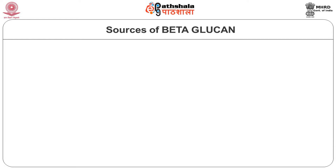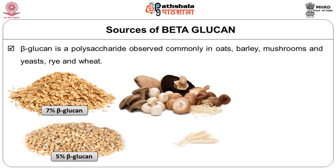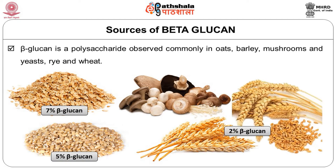Branched beta-1,4/1,6 D-glucan and beta-1,3/1,6 D-glucan are found in different groups of yeast, fungi and algae. In algae, beta-glucans are present as storage polysaccharides or cell wall components. Beta-glucan is a polysaccharide found commonly in oats, barley, mushrooms, yeast, rye and wheat. Oat bran contains about 7% beta-glucan. Dry-rolled oats contains about 5%, as does hulled barley. Whole wheat and rye contains about 2% of beta-glucan. Psyllium husk also shows considerable amounts of beta-glucan.